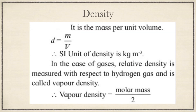The next measurable property is density, defined as mass per unit volume: d = m/V. The SI unit of density is kg/m³ (kilogram per meter cube, or kg·m⁻³). In the case of gases, the relative density measured with respect to hydrogen gas is called vapor density, which equals molar mass divided by 2.